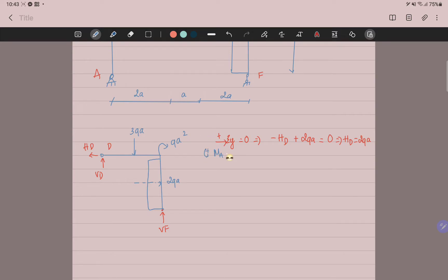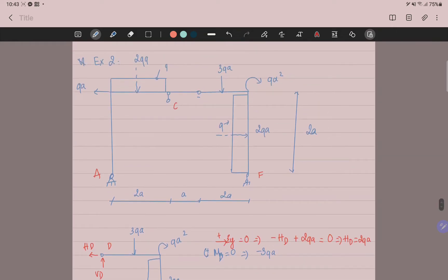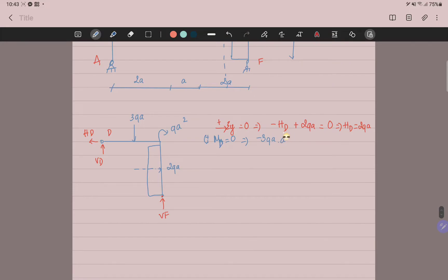If moment at A equals zero, at T you have minus 3QA plus the length of 2QA in this. If moment is A, plus 2QA plus A, this is the length of 2QA in here. And plus VF multiplied by A minus QA equals zero. You have VF equals QA.